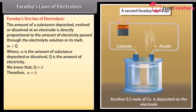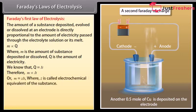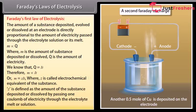We know that Q is equal to I T. Therefore M is directly proportional to I T. It can be written as M is equal to Z I T, where Z is called electrochemical equivalent of the substance. Z is defined as the amount of the substance deposited or dissolved by passing one coulomb of electricity through the electrolyte melt or solution.